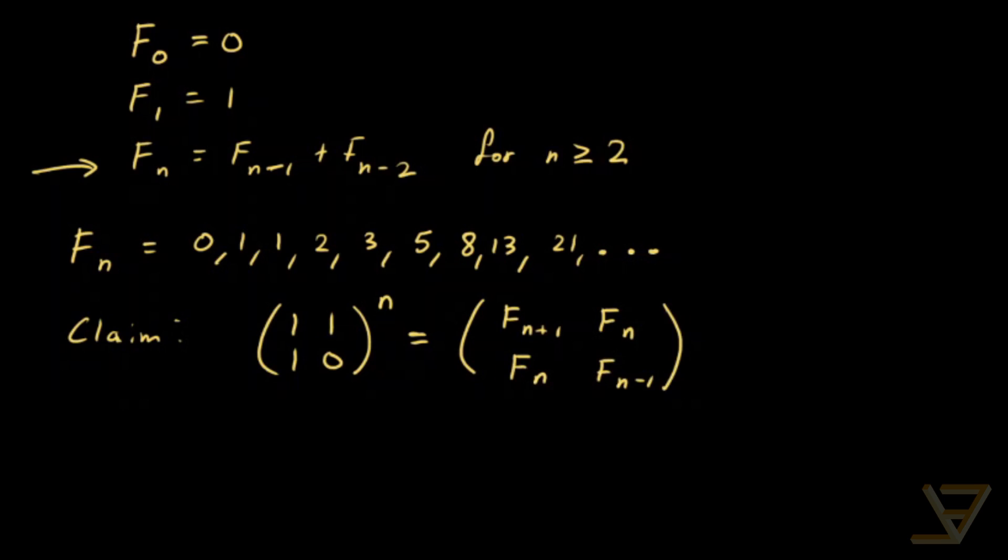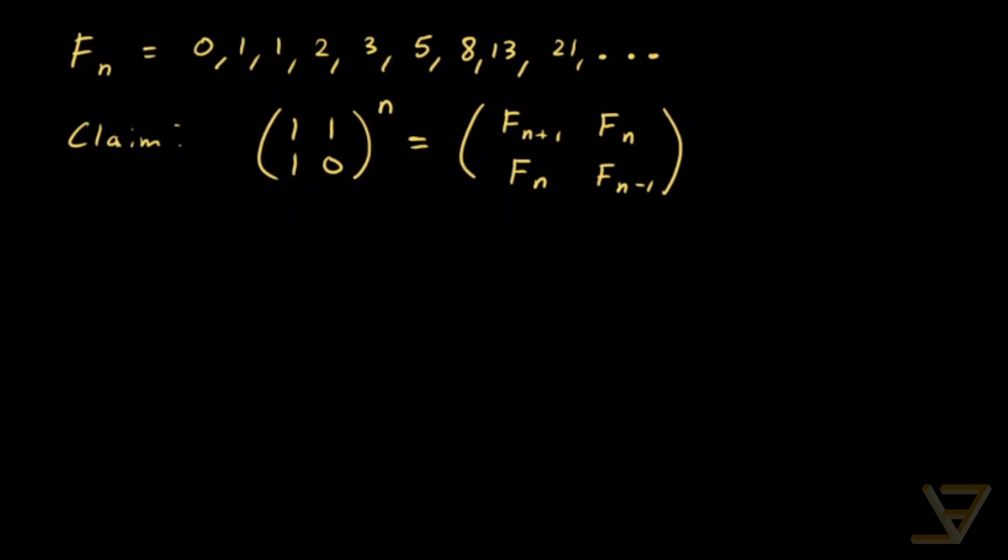So let's start off by proving that claim, and we're going to do it by induction. In the base case, we have that [[1,1],[1,0]] to the 1, that's just the matrix itself, is equal to [[F2, F1], [F1, F0]]. So the base case holds.